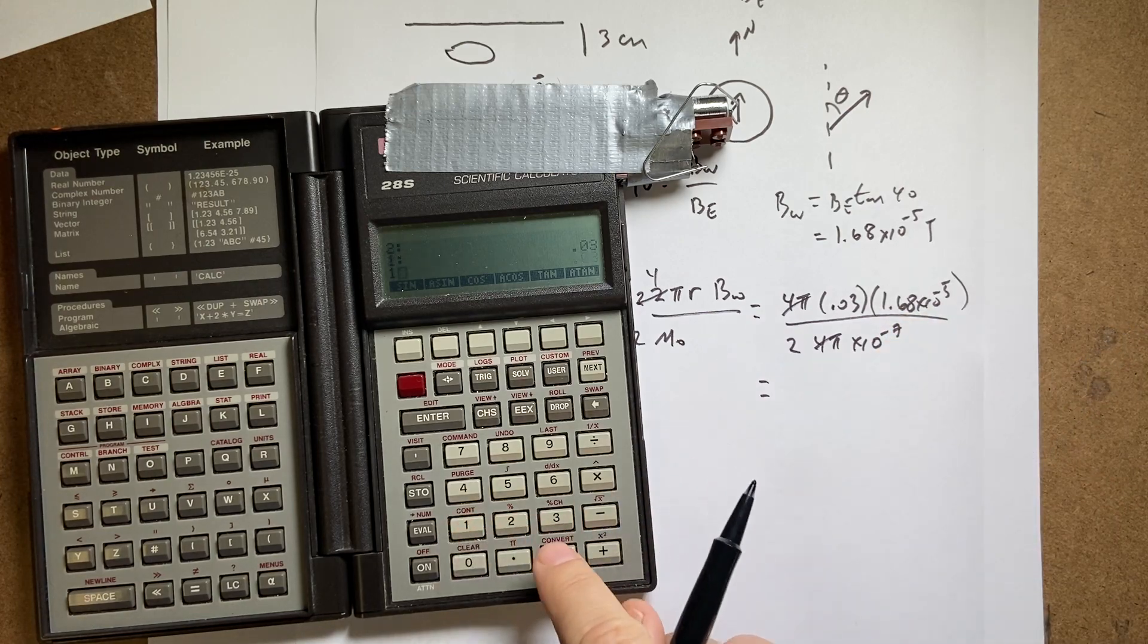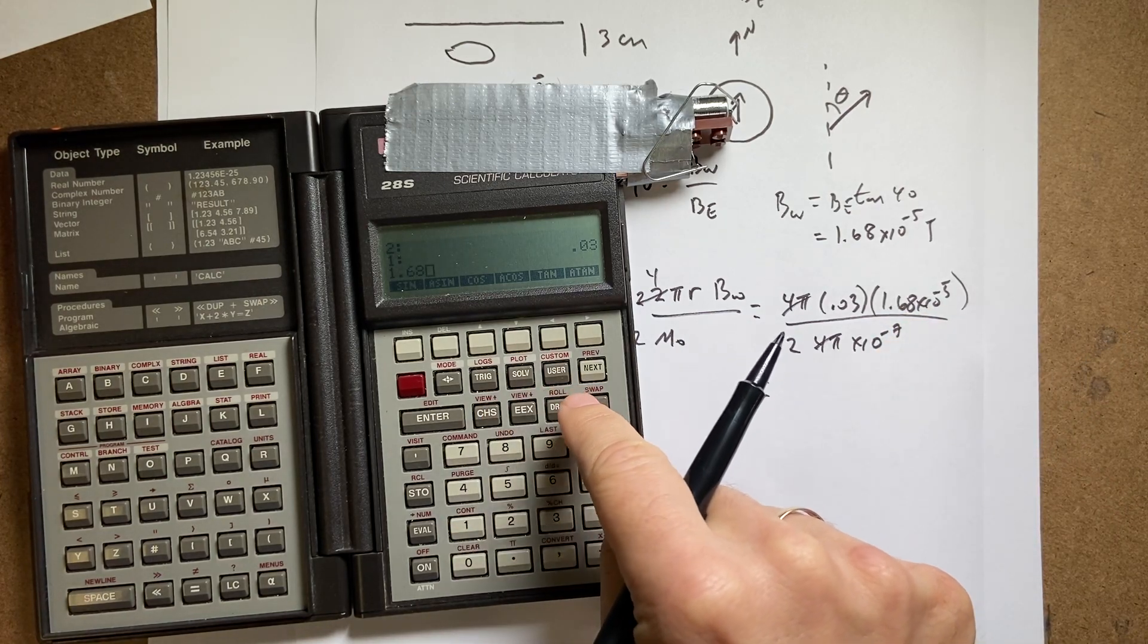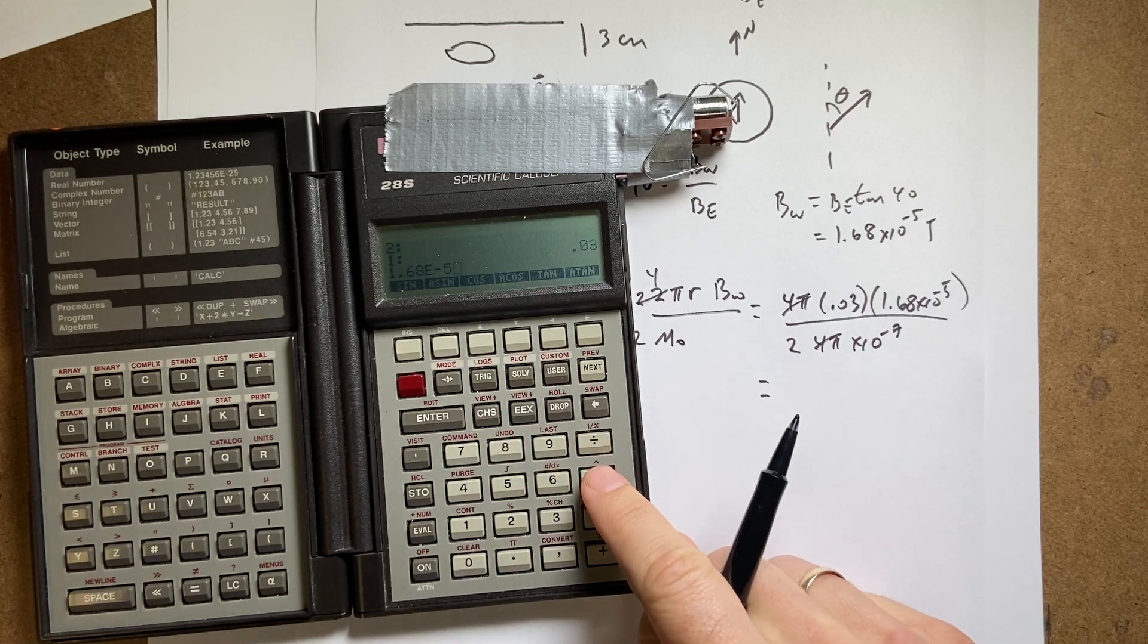Enter. This 1.68 times 10 to the negative 5. Times.